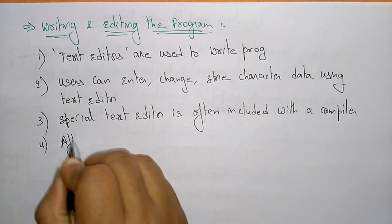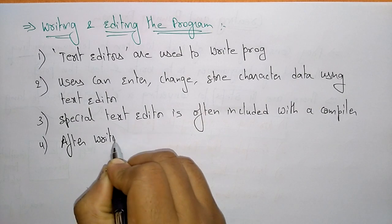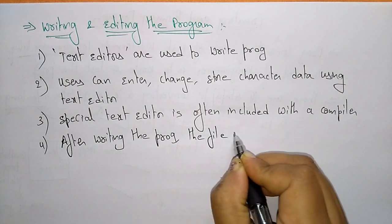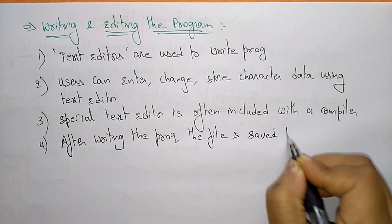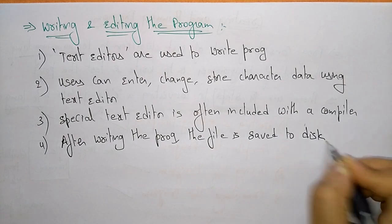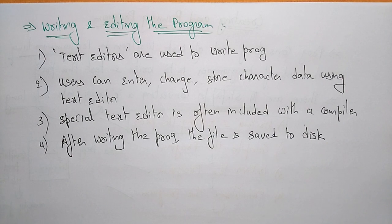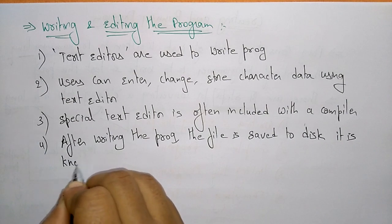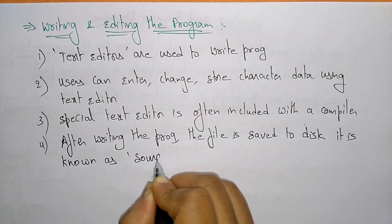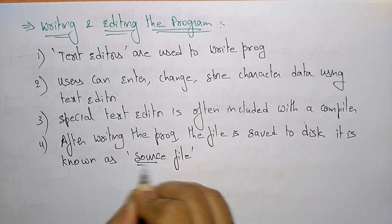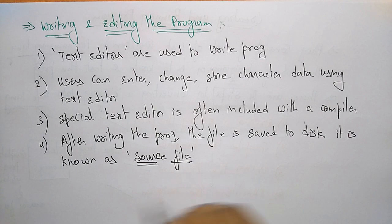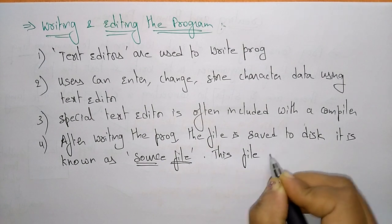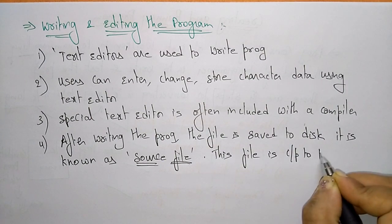After writing the program in the text editor, the file is saved to disk. Only after saving can you compile the program. The saved file is known as a source file — whatever input file you have written is called the source file. This source file is the input to the compiler.